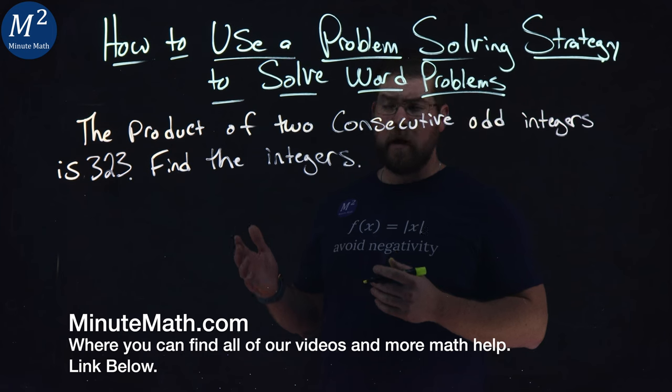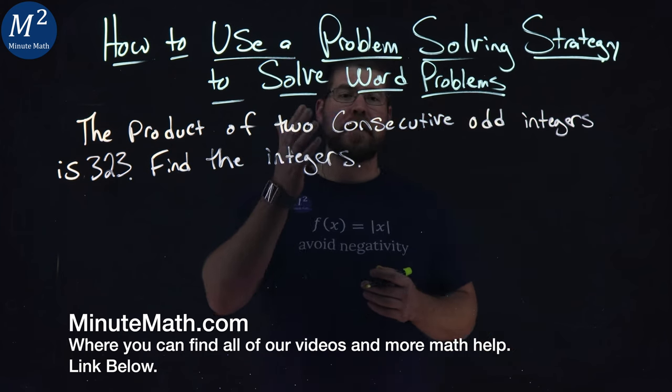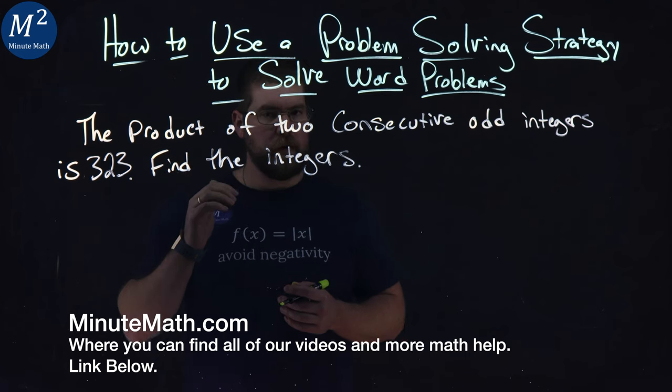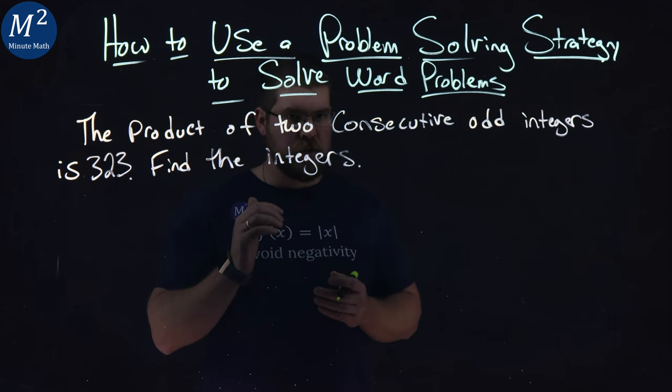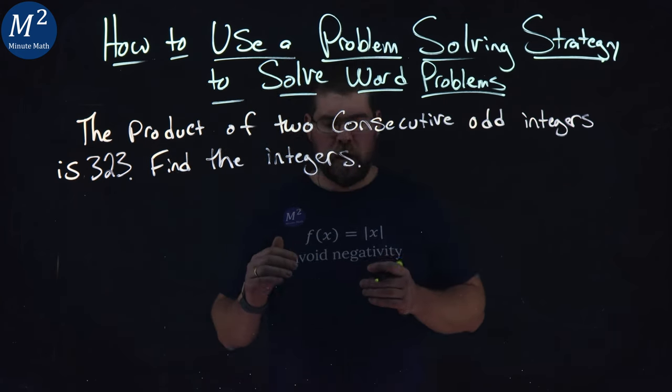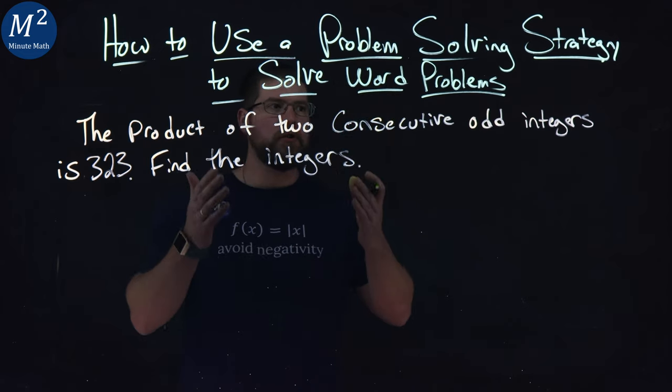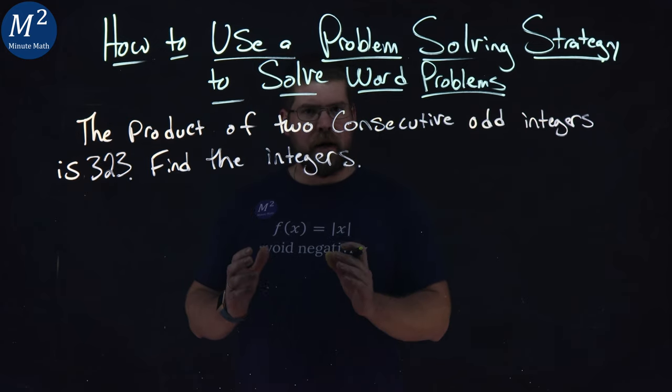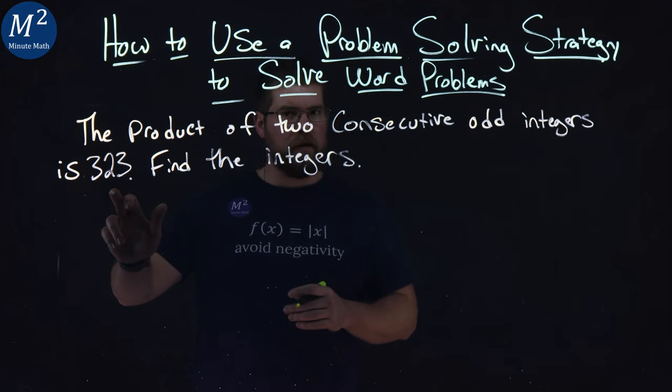We're given this word problem: The product of two consecutive odd integers is 323. Find the integers. Okay, what is the problem asking? We want two consecutive odd integers that are being multiplied that equal 323.